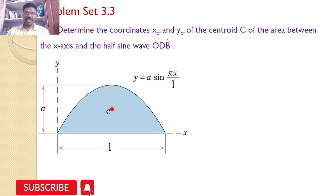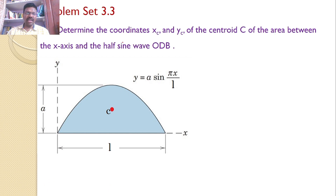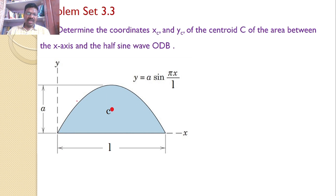Determine the coordinates xc and yc of the centroid C of the area between the x-axis and the half sine wave. The equation for the half sine wave is y = a·sin(πx/l). Our interest is to find the centroid for this half sine wave.